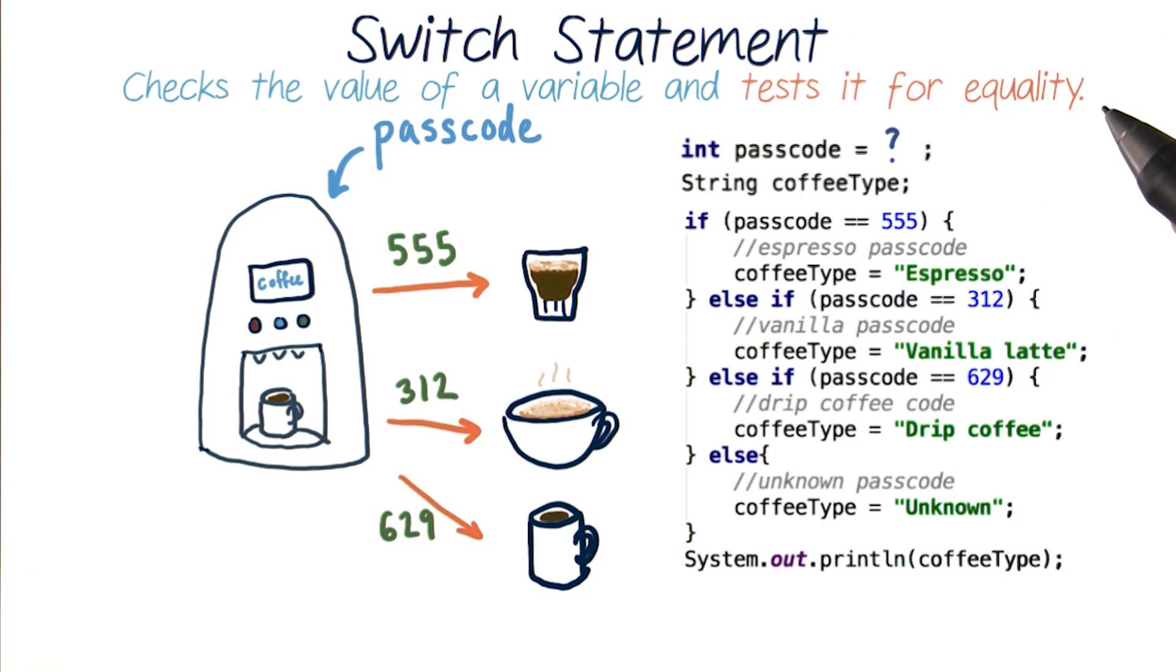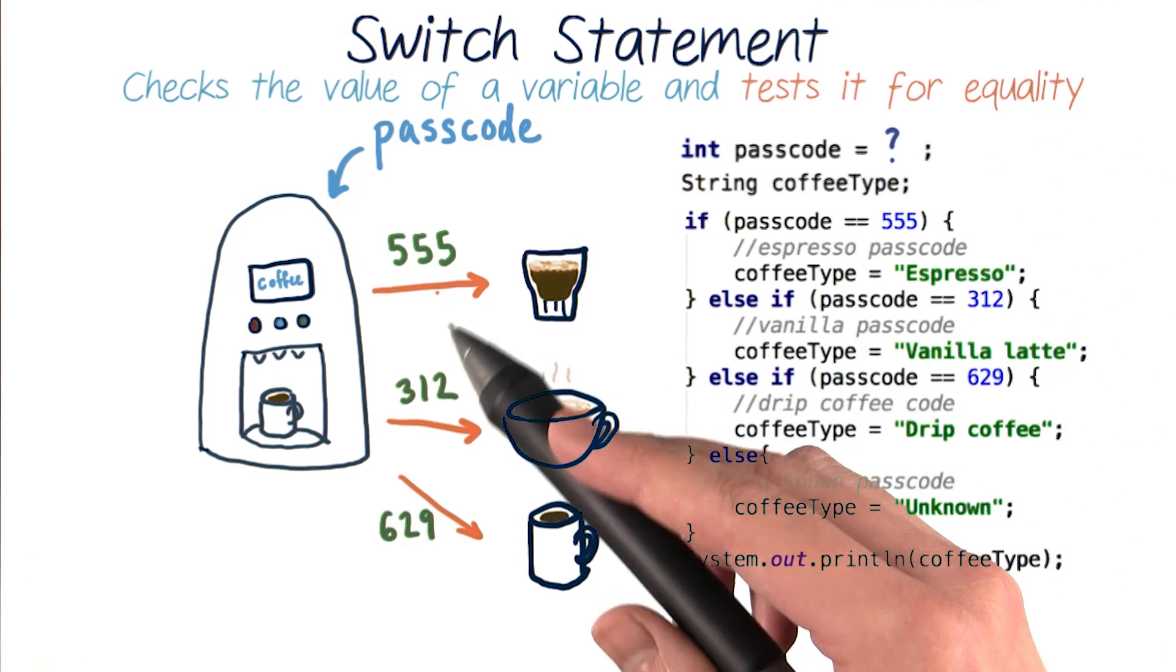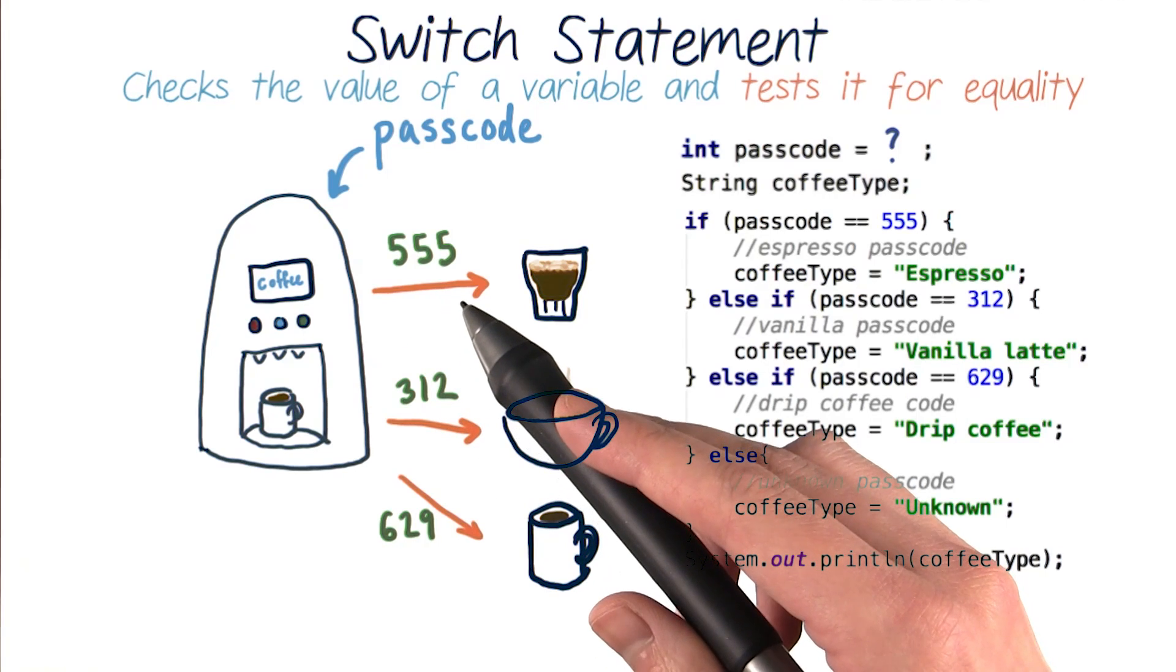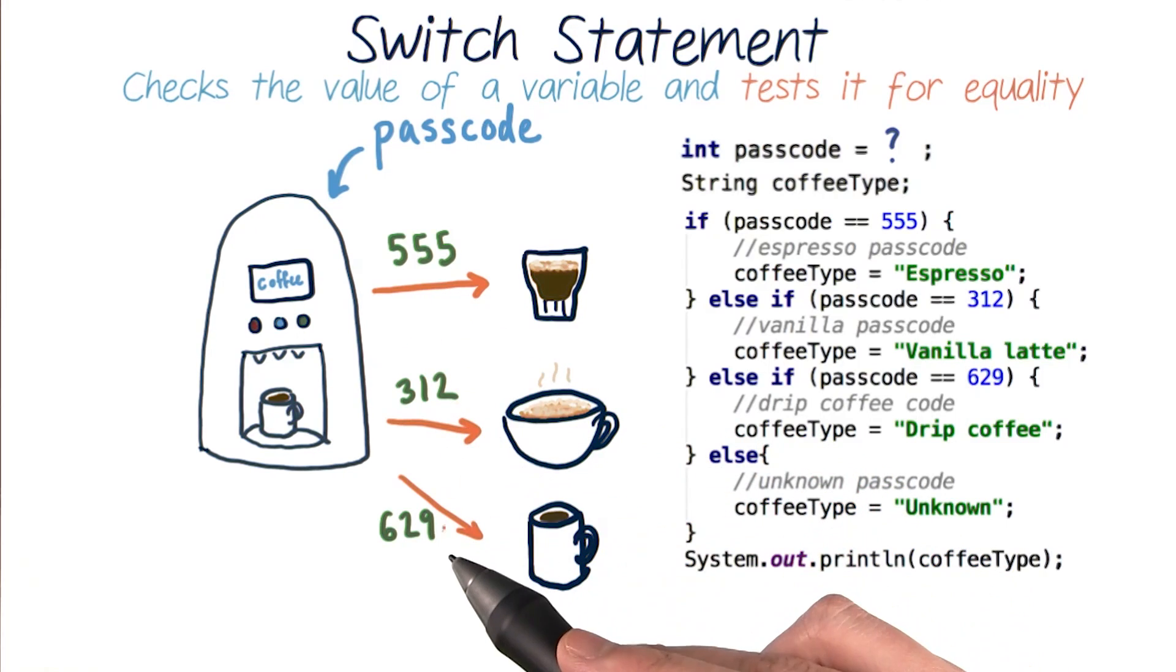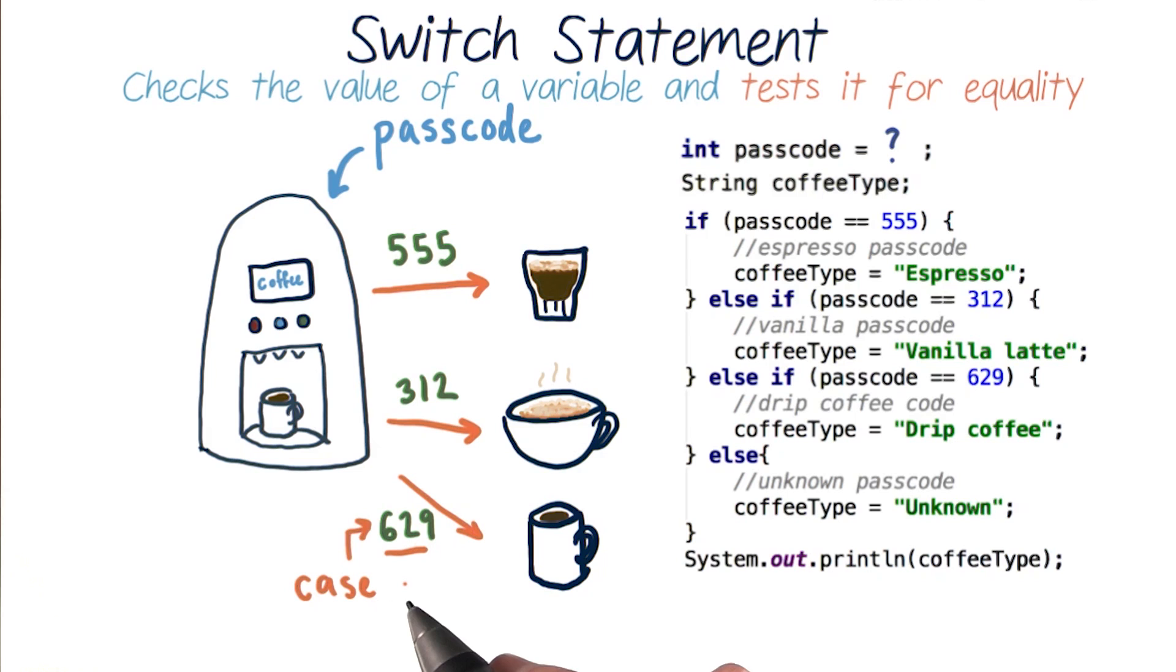A switch statement does the same thing a little more concisely. It lets us check the value of a certain variable, like our passcode, and test it for equality against a list of possible values it can take, like 555, 312, and 629. Each of these specific values is called a case, and we can program different behavior for each case.